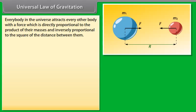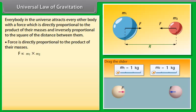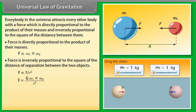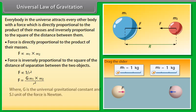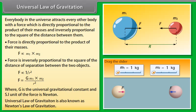The universal law of gravitation states that the force between two objects is directly proportional to the product of their masses and inversely proportional to the square of the distance between them. The formula is: F = G·M₁·M₂ / R², where G is the universal gravitational constant. The SI unit of force is Newton. This law is also known as Newton's law of gravitation.